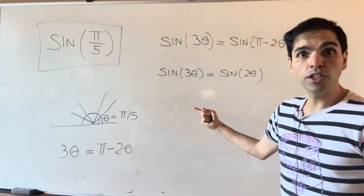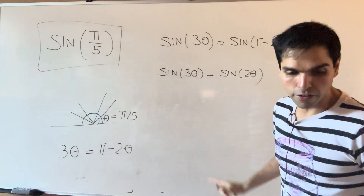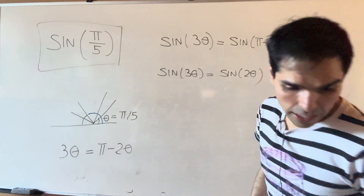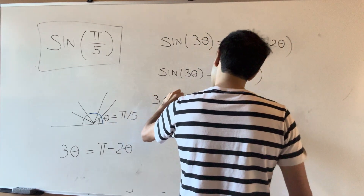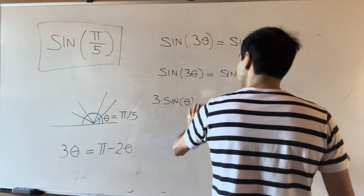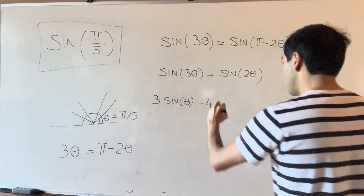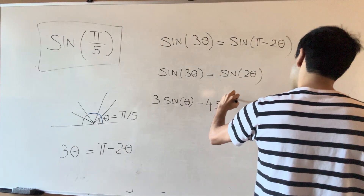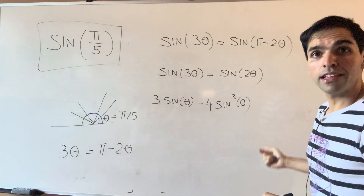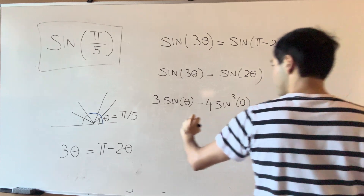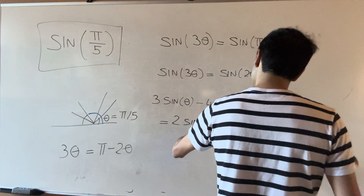We can use our formulas for sine of three theta and sine of two theta. Sine of three theta, using the angle addition formulas, is three sine theta minus four sine cubed theta. And sine of two theta is two sine theta cosine theta.